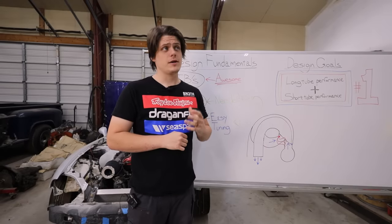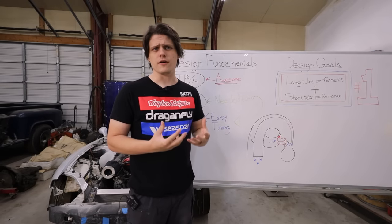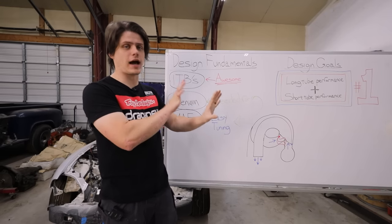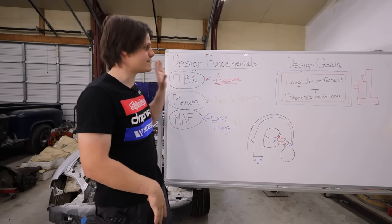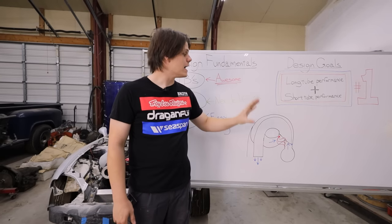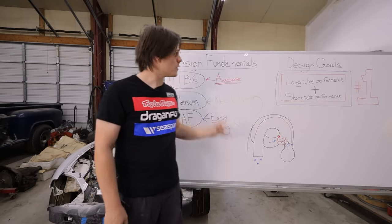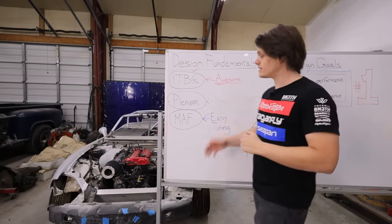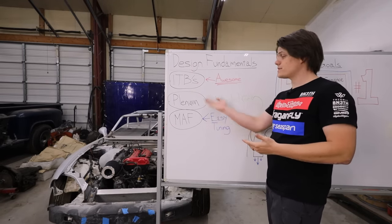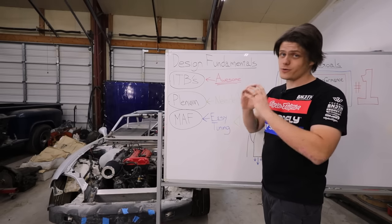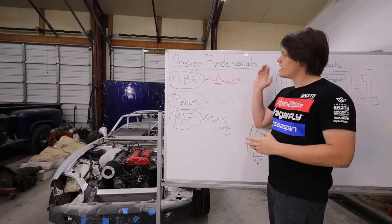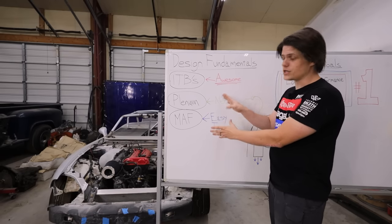That series of CFD tests got me doing a lot of thinking about what the core principles of this design really are. I wanted to separate them into distinct categories: design fundamentals, design goals, and design restrictions. The fundamentals are: having a MAP sensor, which makes tuning a lot easier; a plenum, which is necessary to run the MAP sensor so all the air comes in through one area; and ITBs, because they're freaking awesome. None of these things are ever going to change in the intake design.